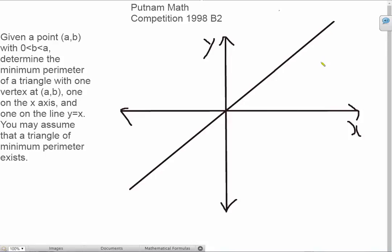So basically, you're standing at this point (a,b) and then let's suppose the x-axis is a river and the line y=x is some road.